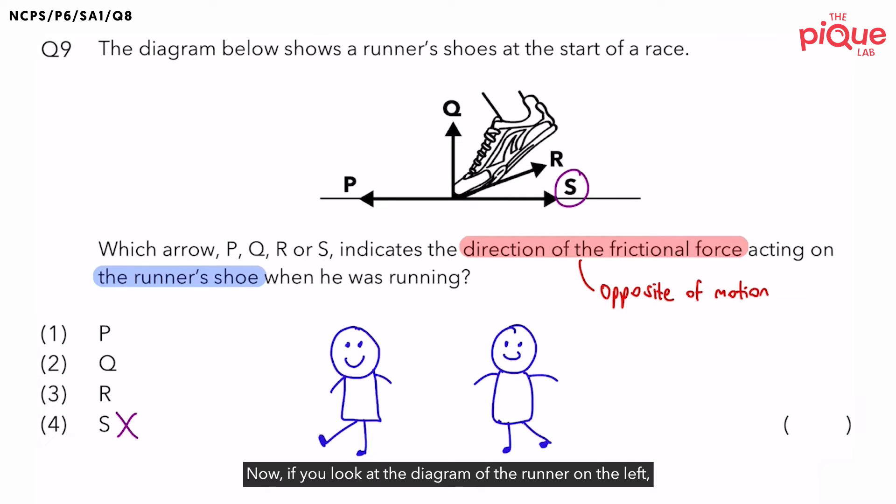Now, if you look at the diagram of the runner on the left, when he was running, what was he doing? You can see he's kicking his foot forward. Versus, when you look at the runner on the right, how was he kicking his foot? This time, did the runner kick his foot forward or backward? You can see he's kicking the foot backwards.